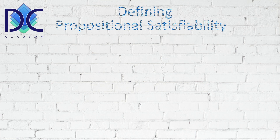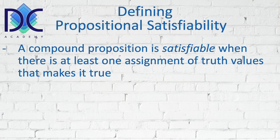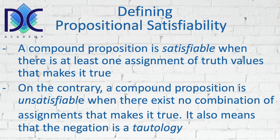First of all we have to define what propositional satisfiability is. A compound proposition is satisfiable when there is at least one assignment of truth values that makes it true. So when we can find a combination of truth values that makes the compound proposition true, we can say that it is satisfiable. On the contrary, when a compound proposition doesn't have any assignment for which we have a true truth value, then we call it unsatisfiable.